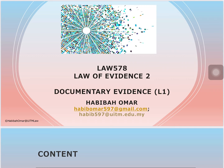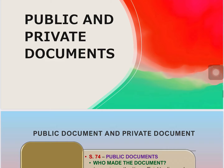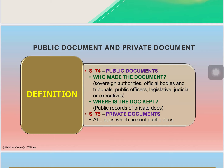Welcome to the lecture on documentary evidence, lecture 3. In this video, I'm going to explain the law relating to public and private documents. When I ask generally what is a public document, the general answer I normally get is documents where the public have access to. That is not the correct definition. The definition of public document is found under section 74 of the Evidence Act.